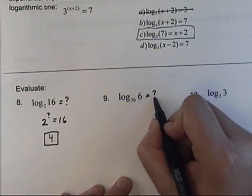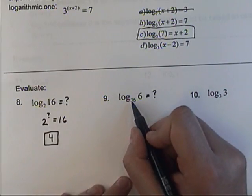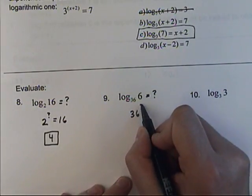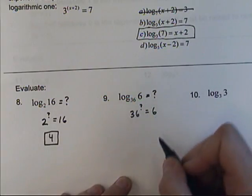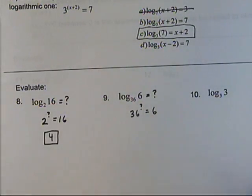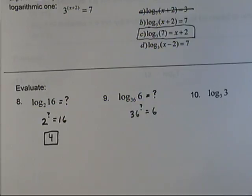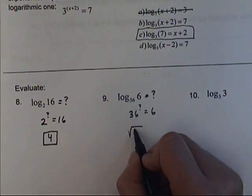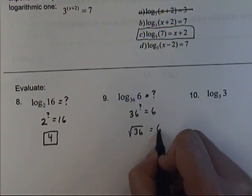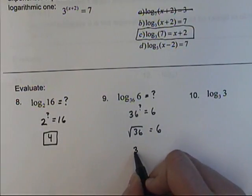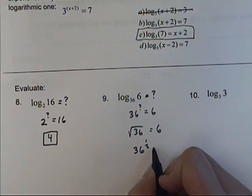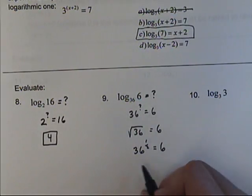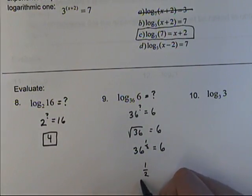So again, I would set this equal to a question mark. So if I unravel this, this is our base, 36, raised to what power equals 6? Well, this is a little bit more complicated, because clearly we don't know exactly what it is. It's not a 2, or a 3, or a 4, or a 5. It's not a whole number. So how do we do that? Well, basically, if you take the square root of 36, you get 6, right? So what would the square root be as an exponent? Maybe you remember this, maybe you don't. It's 1 half. So the answer is 1 half.